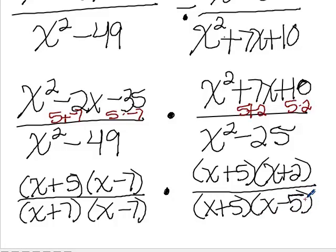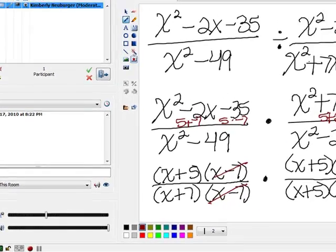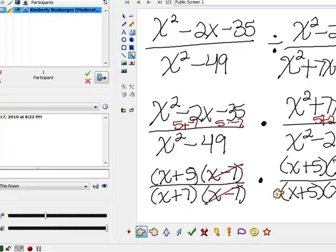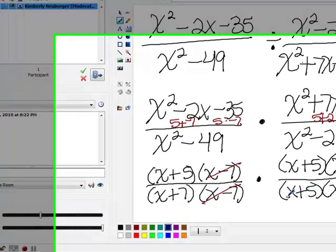Now let's see what we can pair up. I notice right away these x minus 7s. And then I also notice I have one x plus 5 in the denominator here. So I need to either pair it up with the one right above it or the one diagonally, but not with both of them. So I'm going to go ahead and cancel it with the one right above it.